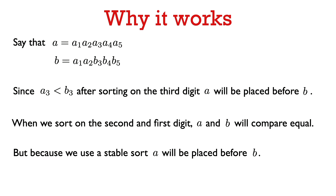When we sort according to the second digit and the first digit, A and B are going to compare equal because they agree in the first two digits. But because A comes before B after the sort on the third digit, A will still come before B after the sort on the second digit, and A will still come before B after the sort on the first digit — again because we're using a stable sort on the second and first digits. So at the end of the algorithm, A is going to come before B. That's why Radix Sort is a correct sorting algorithm.